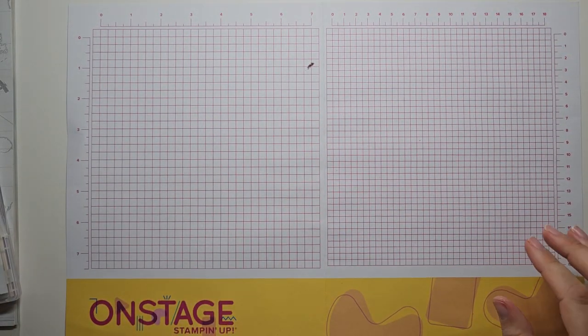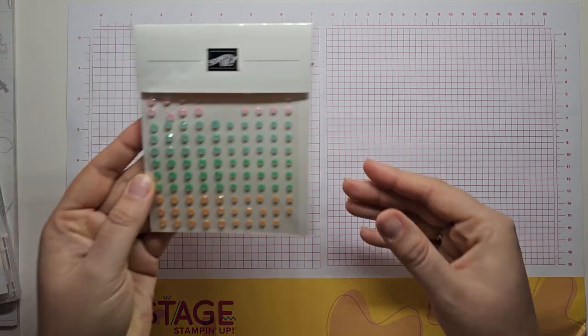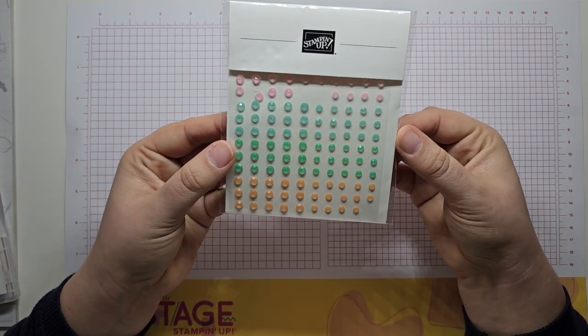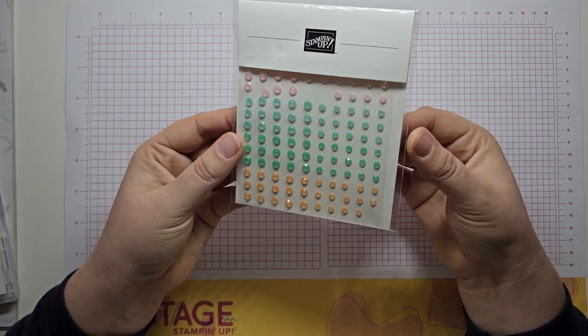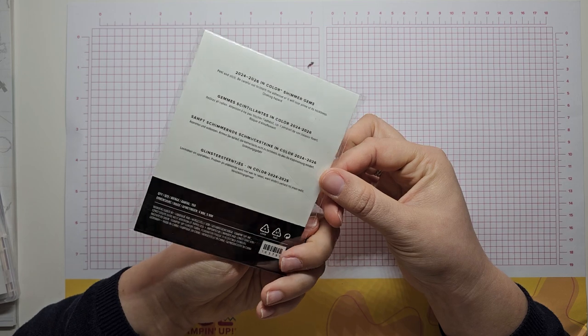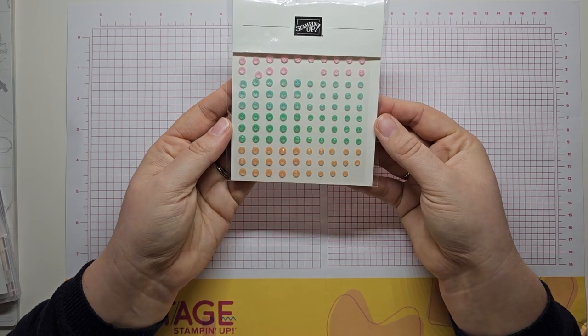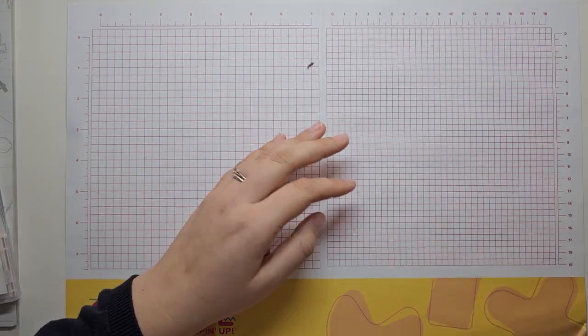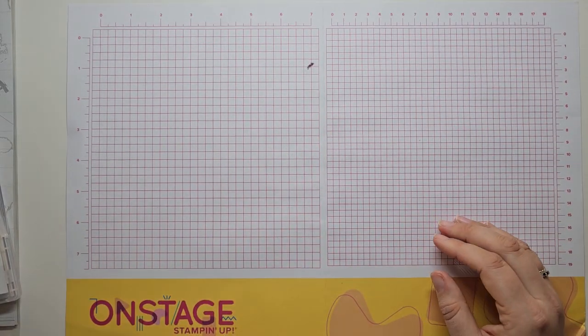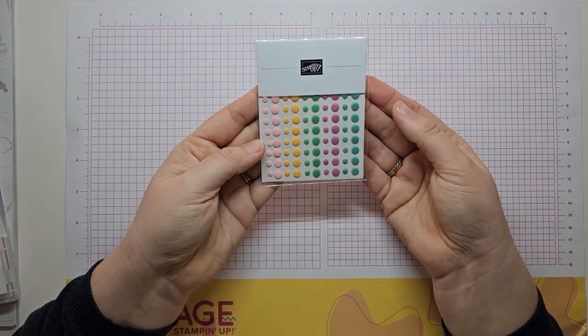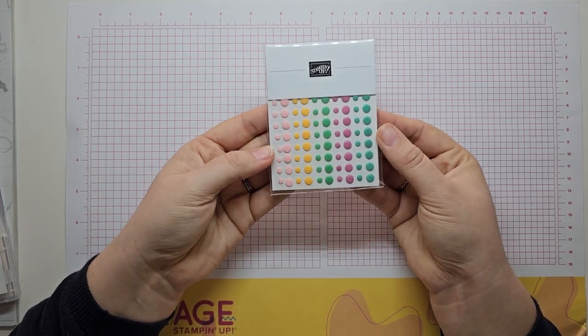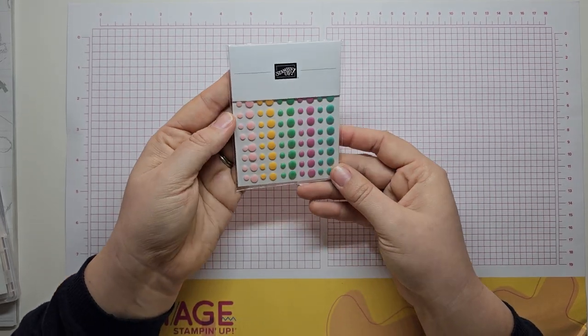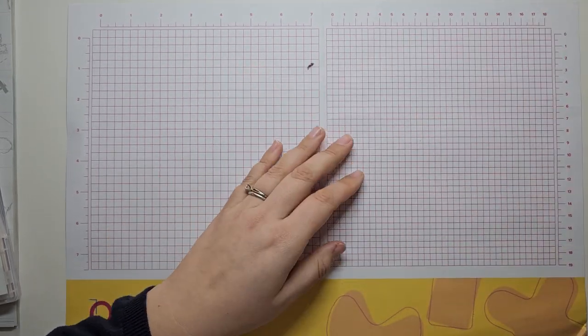As part of On Stage After Hours I received the cardstock but also the in colour shimmer gems. So you get 150 in each packet, all five colours and two different sizes. And then I selected to add the resin dots as well in the new in colours. Two different sizes, all five colours and you get 120 in total.